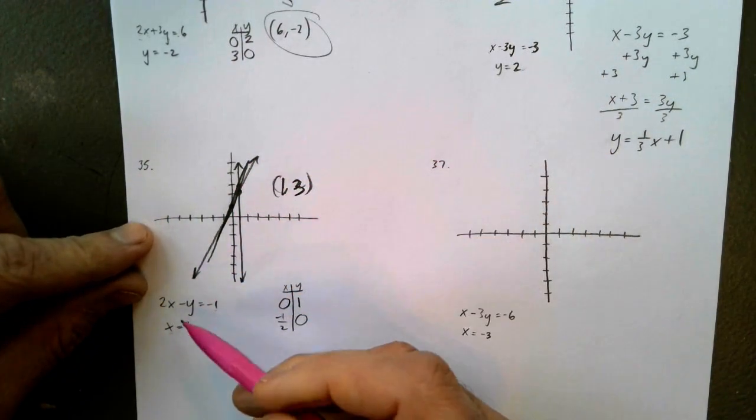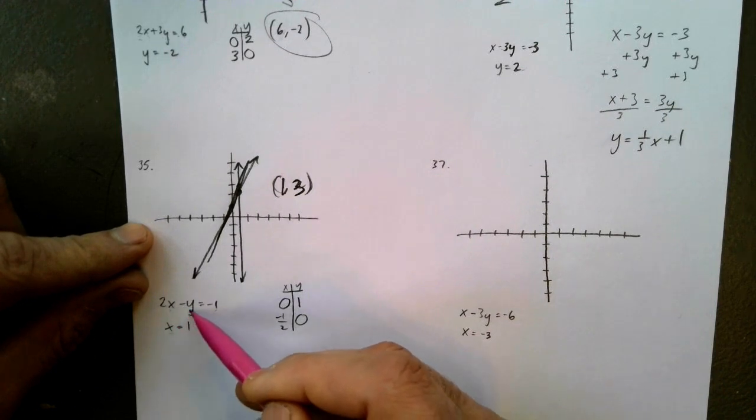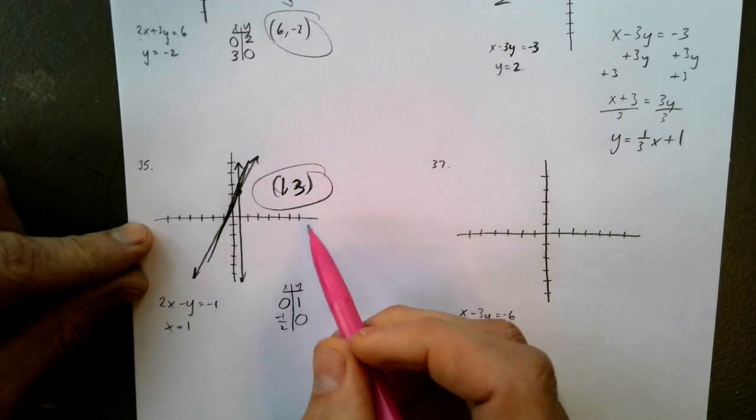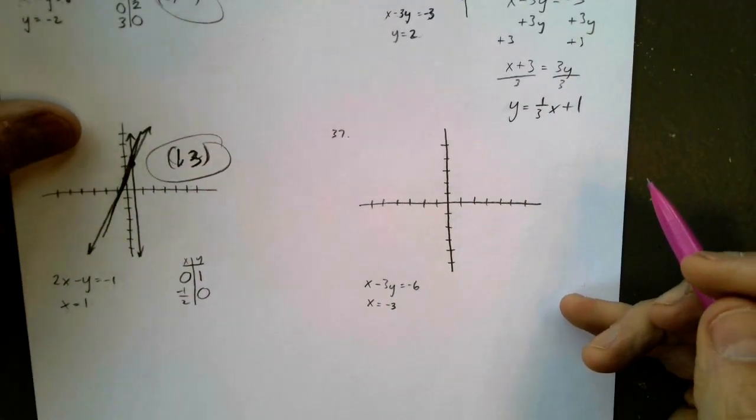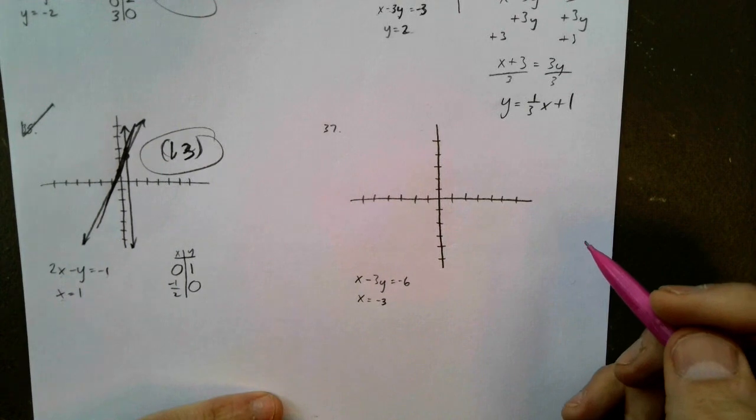Let's try 1, 3. 2 times 1 is 2. 2 minus 3 is negative 1. That's it. That's why we check it. And that's why it helps to use a ruler.